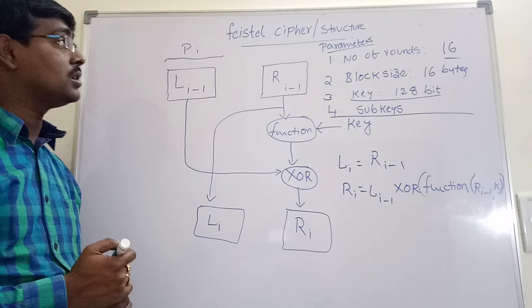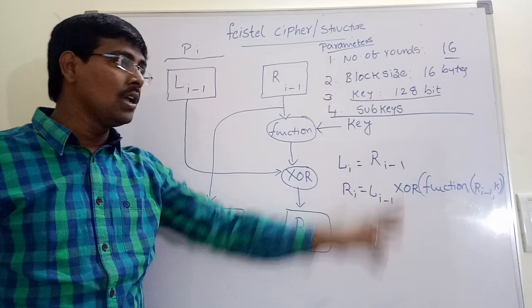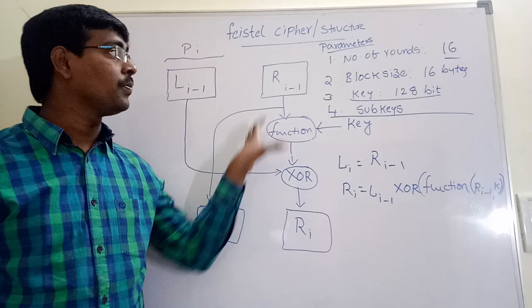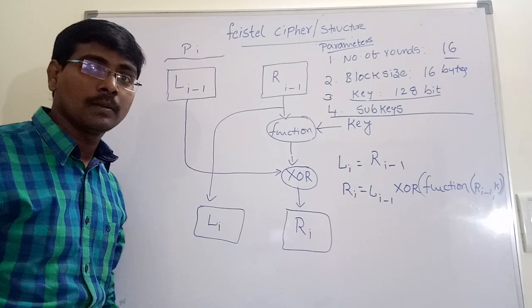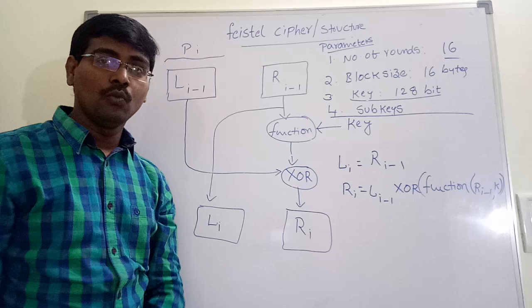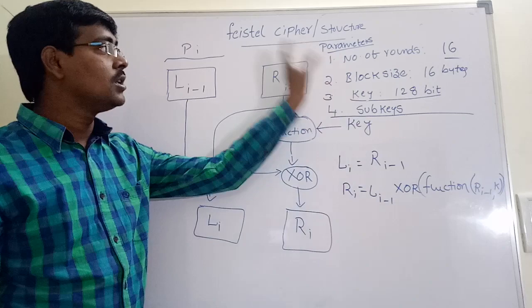This is a Feistel cipher approach. These are the parameters to be considered for each and every algorithm. For example, for DES algorithm, number of rounds 16, plain text, that is the block size, the plain text size is 64 bits key. Key in DES algorithm is 64 bits sub-key. For each round, we are applying only 48 bits key. That is, a sub-key of such 48 only. So this is the procedure of Feistel cipher.